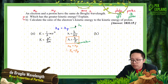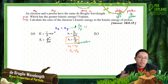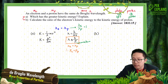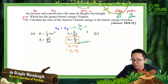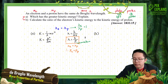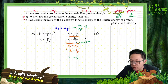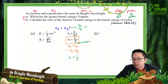Lambda over electron over lambda of proton equals 1 since they have the same value. Lambda is inversely proportional to momentum because h is a constant. So since lambda of electron equals lambda of proton, the momentum of electron equals the momentum of proton — they have the same momentum.